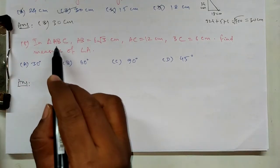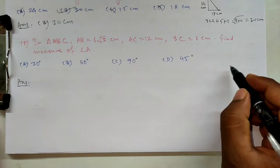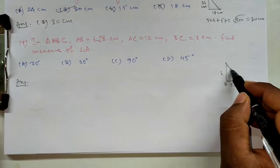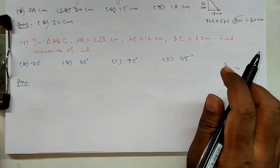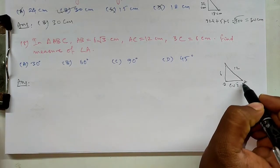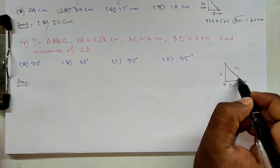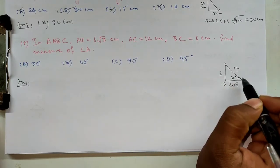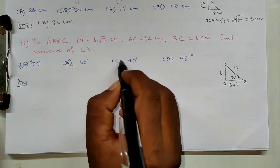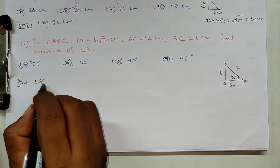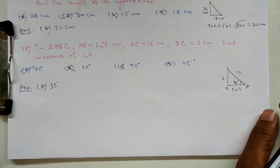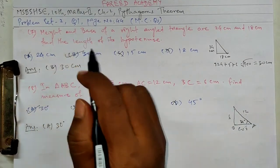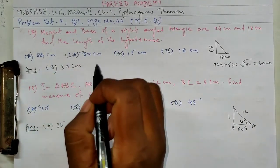In triangle ABC, AB is 6 root 3, BC is 6 and AC is 12. Find measure of angle A. If the length opposite to any angle is half of the hypotenuse, then that angle is 30 degrees. A option is correct. So this way problem set 2 question 1, all 8 questions we have solved.